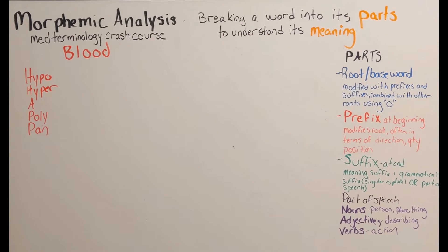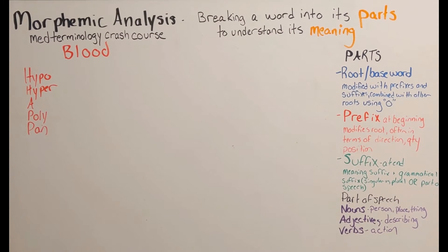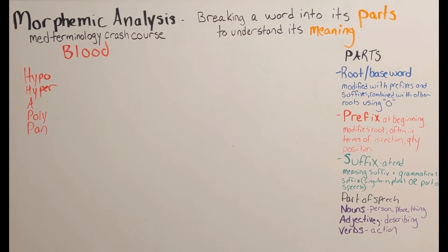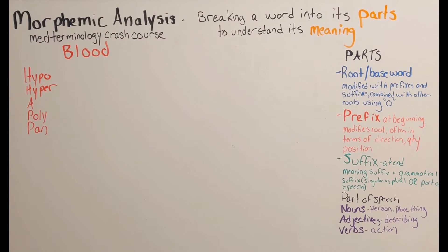The prefix 'a' at the front of a word means without or none. Poly means many, like polytheism — polytheism is a religion with many gods. Pan means all — you should know pan because we all just lived through a pandemic. It was a pandemic because it was everywhere.